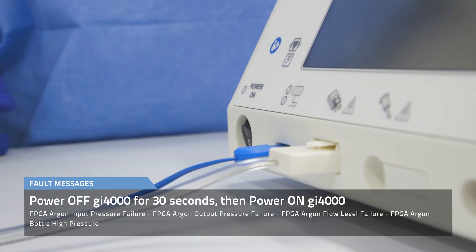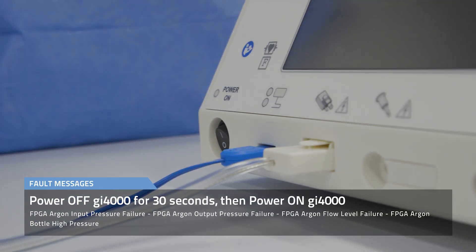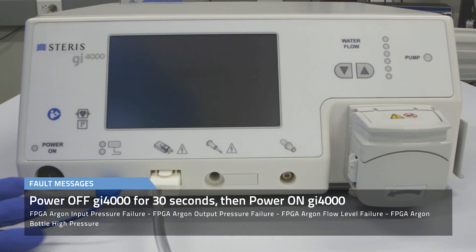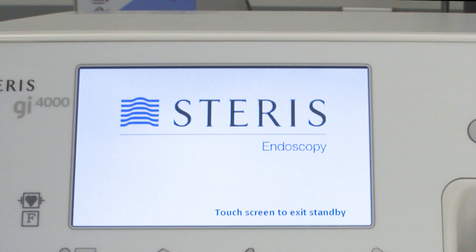In the event one of these fault messages appear on the system display, power off the GI-4000 for 30 seconds. Power on the GI-4000. If the fault message does not appear, continue operation.